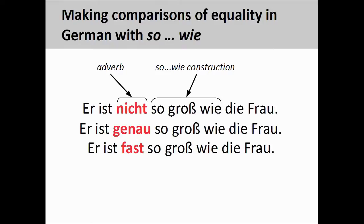It is important to note that you can further modify the 'so...wie' construction with additional adverbs preceding it. For instance, a relationship of equality can be negated through the inclusion of 'nicht', suggesting that the male person is not of the same height as the woman. The adverb 'genau' underscores the equality of the relationship, suggesting the male person is exactly as tall as the woman. Finally, the adverb 'fast' suggests that the two are almost equal in height.